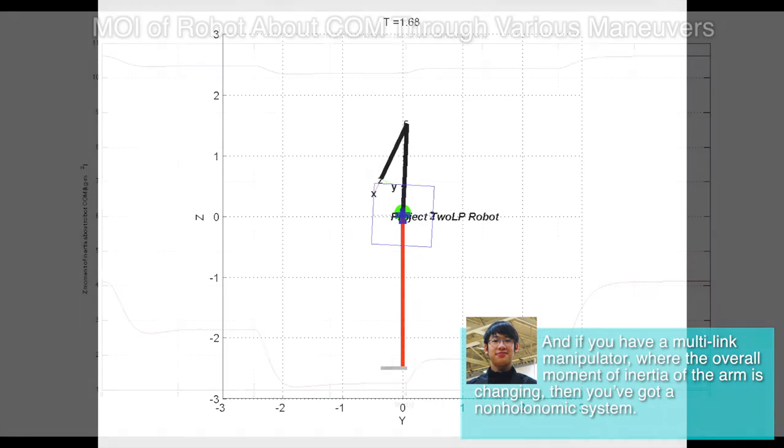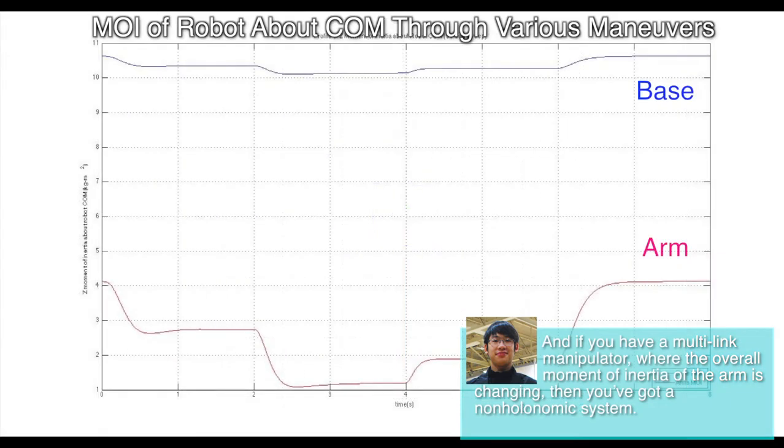And if you have a multi-linked manipulator, where the overall moment of inertia of the arm is changing, then you've got a non-holonomic system.